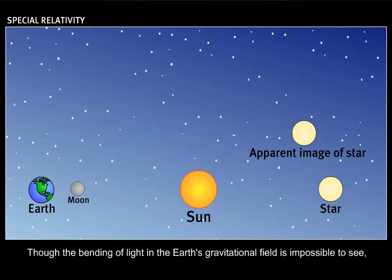Though the bending of light in the earth's gravitational field is impossible to see, the bending of starlight by the sun has been observed during a solar eclipse, which supports Einstein's theory.